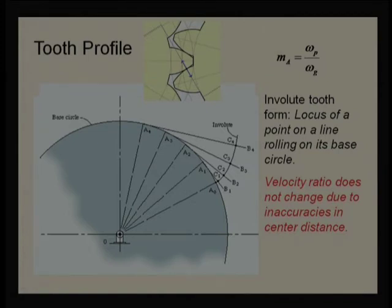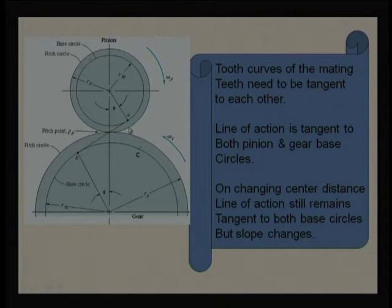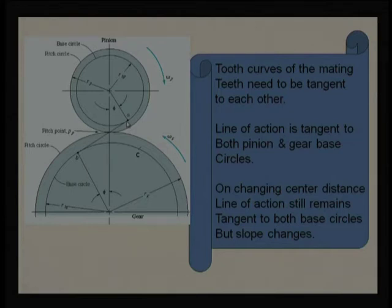Whenever the gear pair is in contact, they maintain a constant velocity ratio, which is important from a drive and mechanism point of view. The base circle is the circle from where the involute profile starts. It is used to calculate all torque and other dimensions. The pitch circle is the effective circle diameter where two discs come in contact, while the base circle is where the involute profile originates.